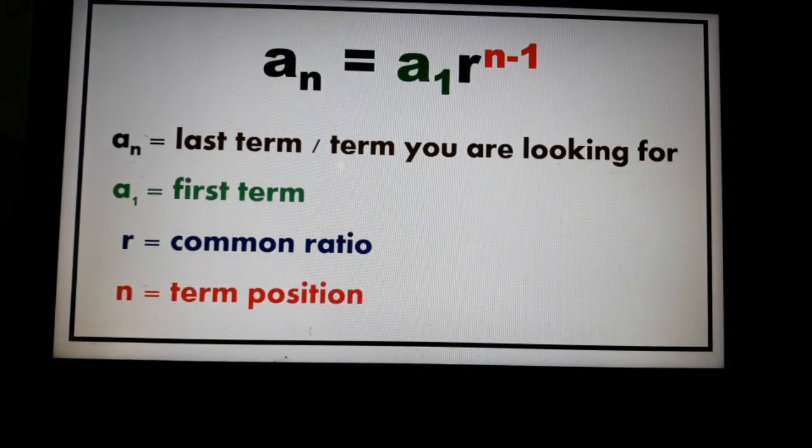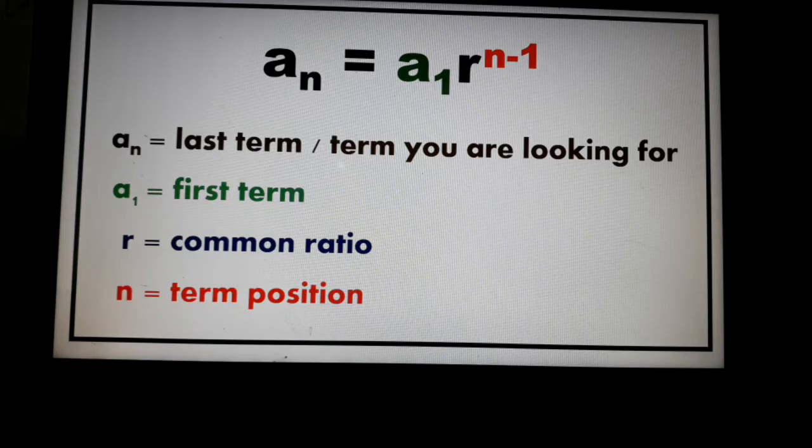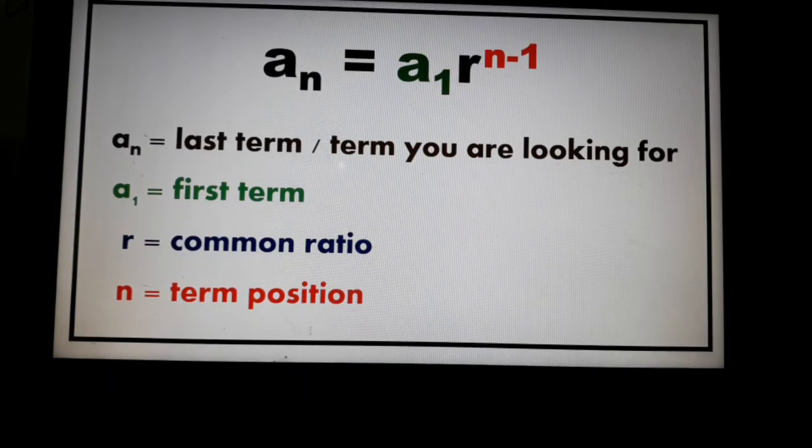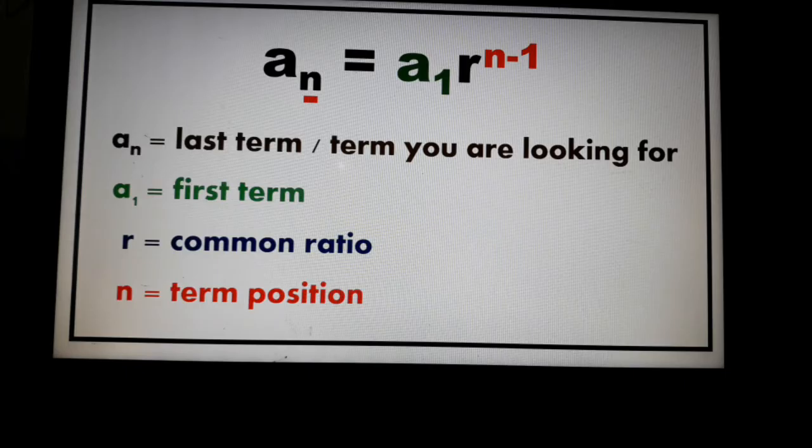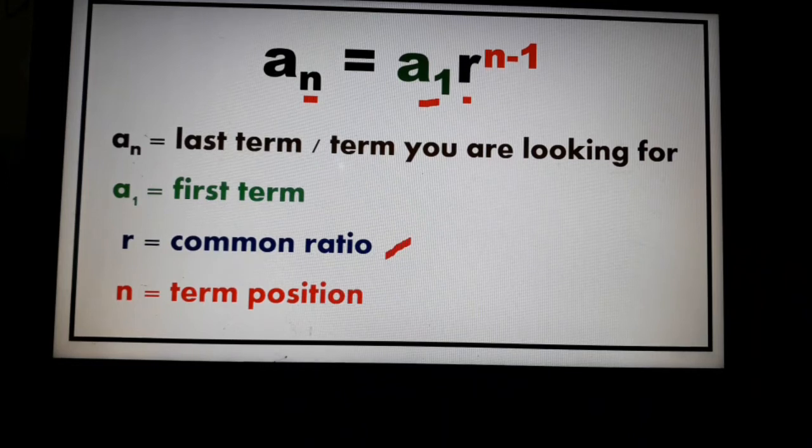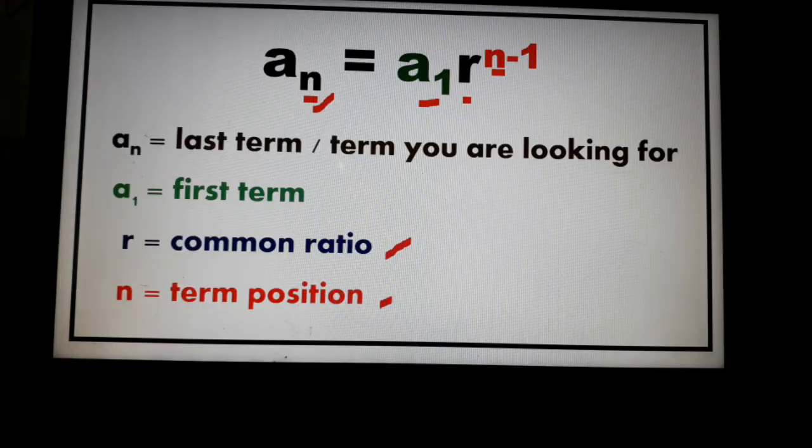Remember that our a_n is the last term or it's the term that you are looking for. So example, if you are asked to look for the 12th term, so a_12. If you're asked to look for the 14th term, so this will be a_14. So remember, a_1 is always the first term. Our r is your common ratio. You get this by dividing two consecutive terms. And then your n, where does it come from? From our a_n. That's your term position.